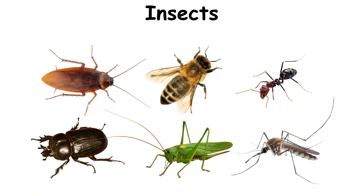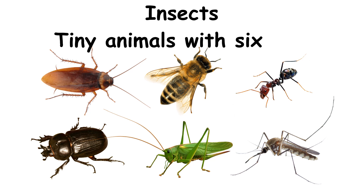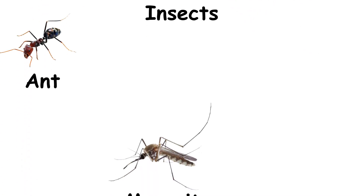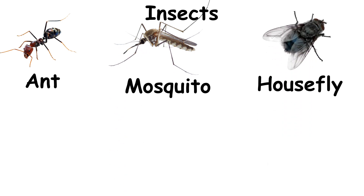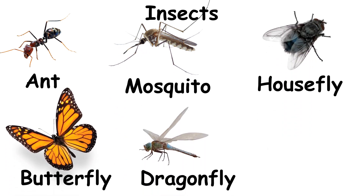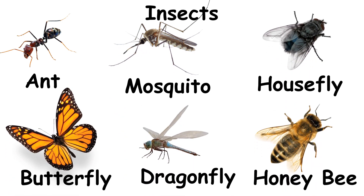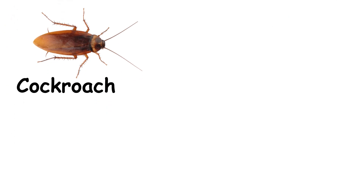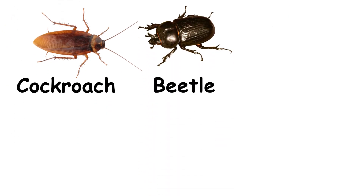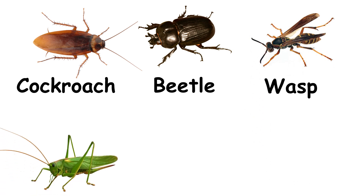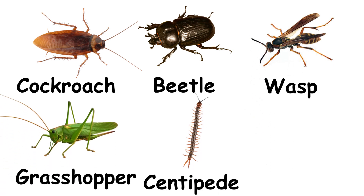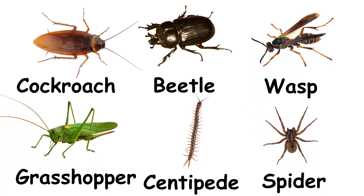Insects are tiny animals with six legs. Some insects around us are ant, mosquito, housefly, butterfly, dragonfly, honeybee, cockroach, beetle, wasp, grasshopper, centipede, spider and many more.